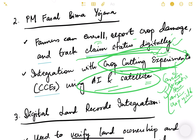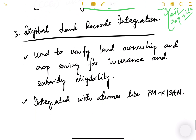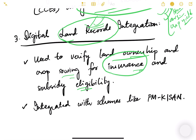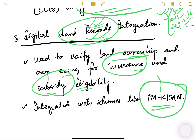Digital land records integration is very important for agriculture. Land records are used to verify land ownership and cropping patterns for insurance and subsidy eligibility. The PM-Kisan portal integrates land records to ensure benefits go to actual land owners only. These are some of the important e-technologies in Indian agriculture, and we will continue this topic in the next video.